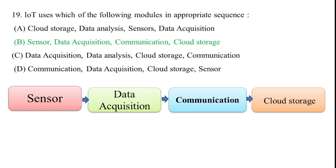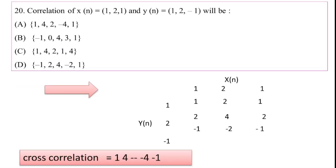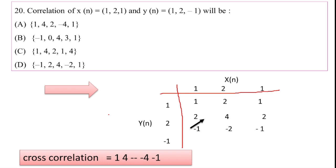Question 20: Cross-correlation of X(n) and Y(n). Given X(n) values of 1, 1 and Y(n) values of 1, -1, compute the cross-correlation.